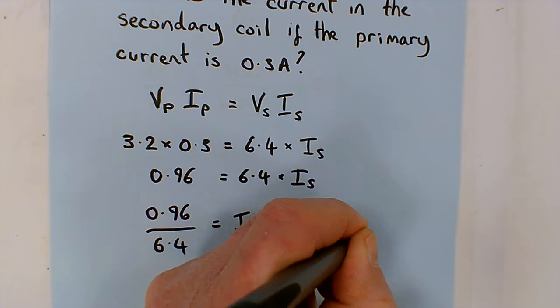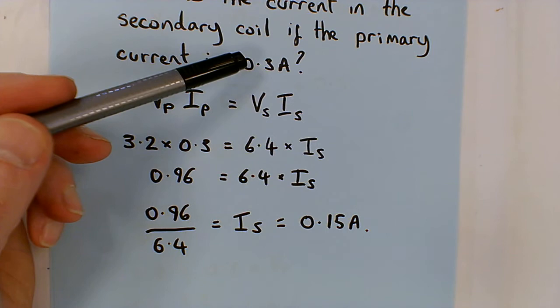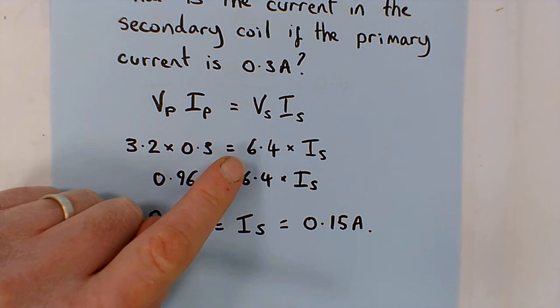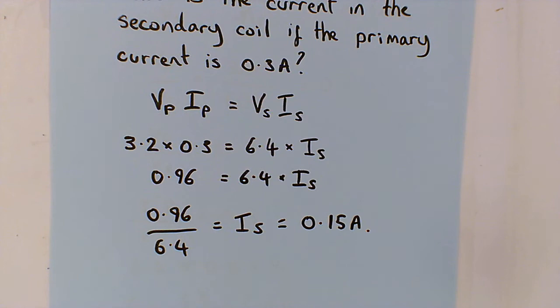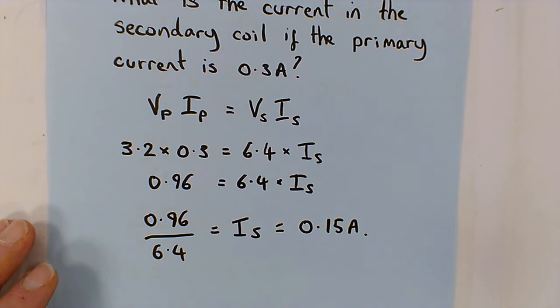And so you can see that we had a current of 0.3 amps, we've increased the voltage from 3.2 to 6.4, but that causes the current to decrease which is great for transmitting electricity across the country. Because reducing the current means that we get less heat loss due to wires heating up and losing it to the heat to the atmosphere. Okay well I hope this helps, good luck.